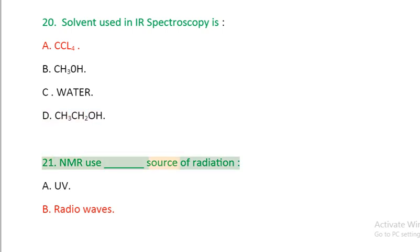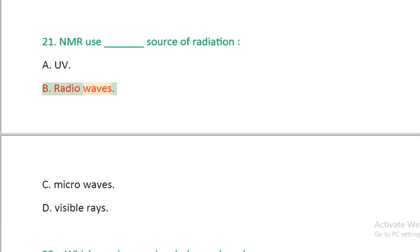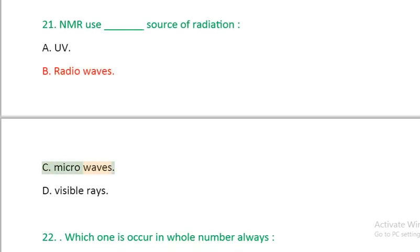Question 21: NMR uses source of radiation: A. UV, B. Radio waves, C. Microwaves, D. Visible rays.